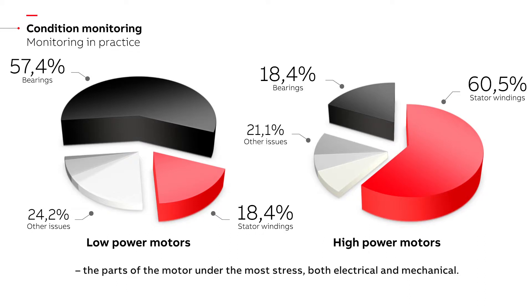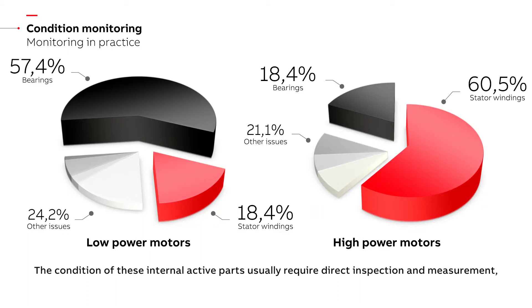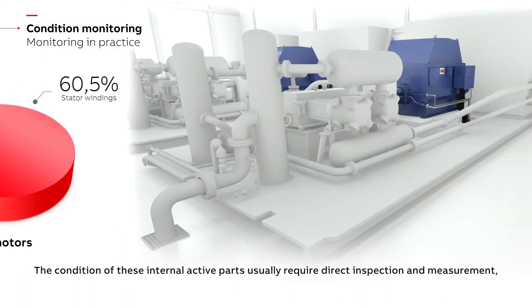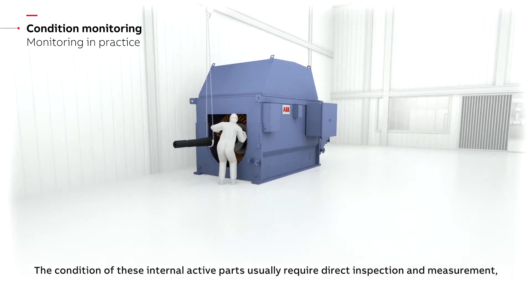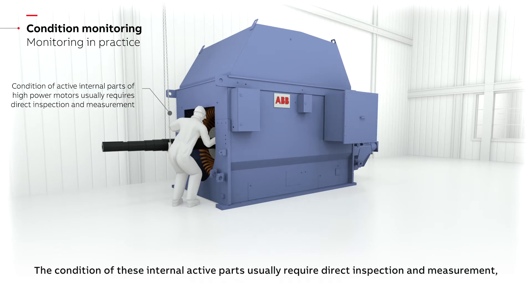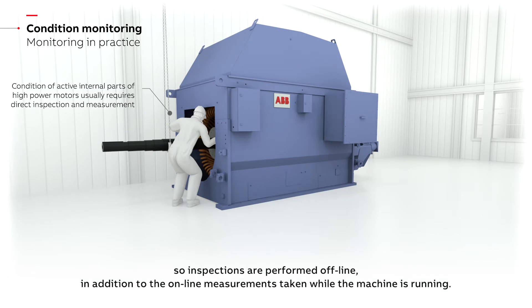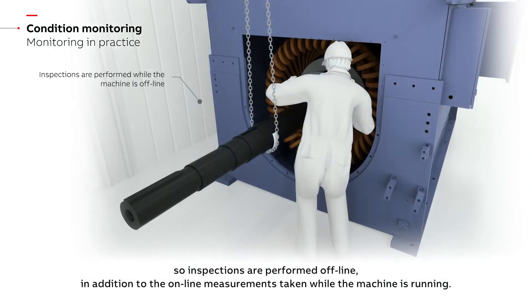The stator windings and rotor bars are the parts of the motor under the most stress, both electrical and mechanical. The condition of these internal active parts usually requires direct inspection and measurement, so inspections are performed offline in addition to the online measurements taken while the machine is running.